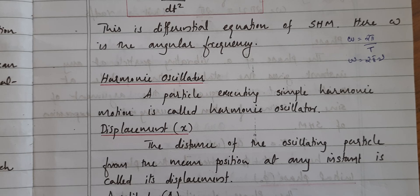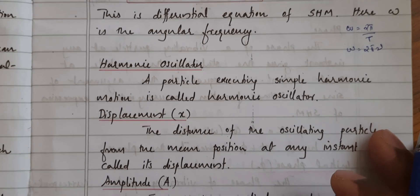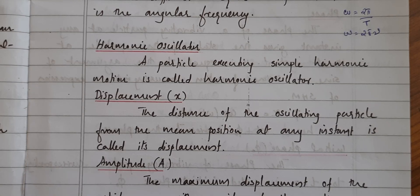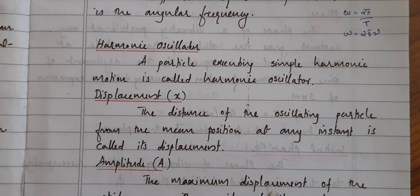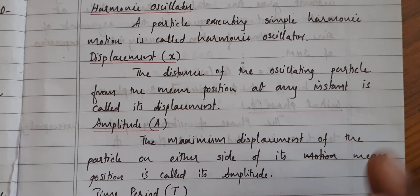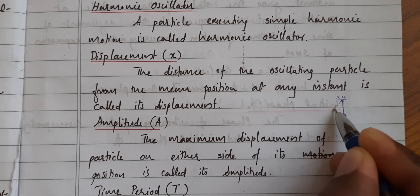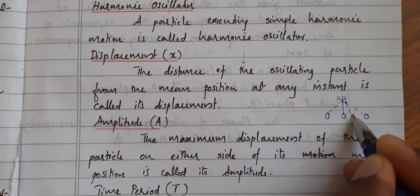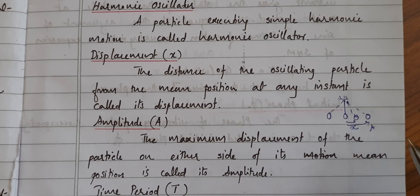A few more terms: a particle executing SHM is called a harmonic oscillator. Displacement is the distance of the oscillating particle from its mean position at a given time. The maximum displacement is called the amplitude, represented as A. For a pendulum taken to one side and released, if at some moment its distance from the mean position is x, that is the displacement; the maximum distance it reaches is the amplitude A.